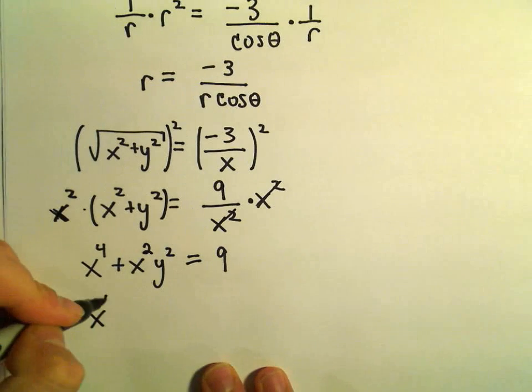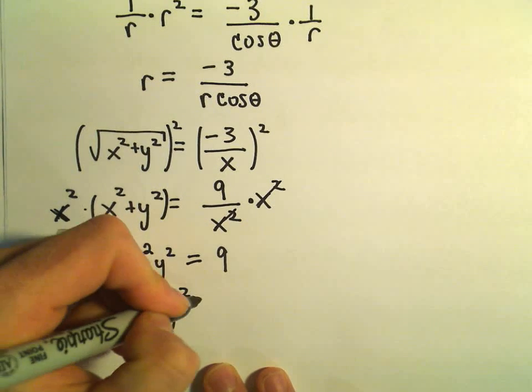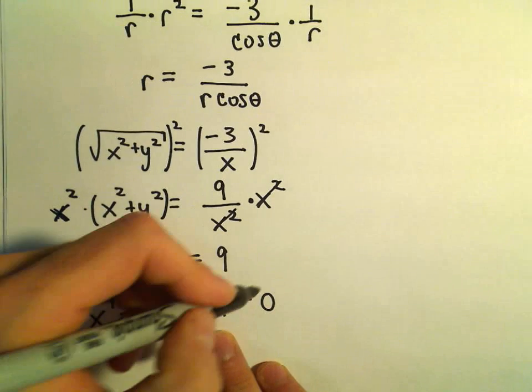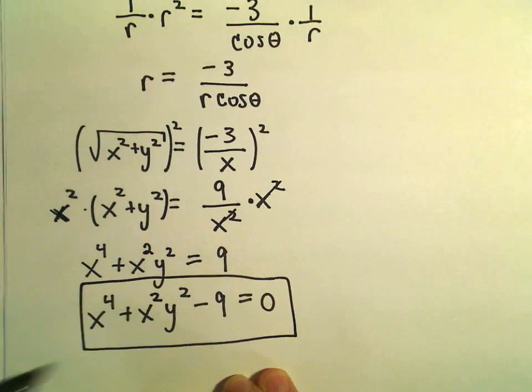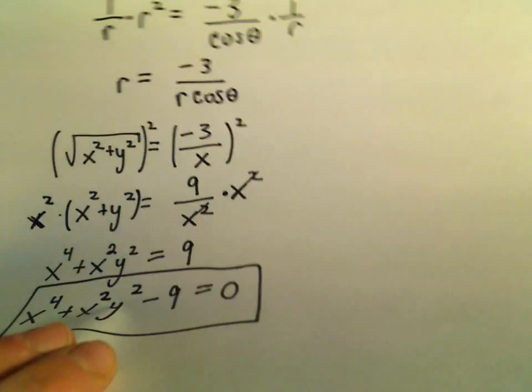So either you could leave it like this or we can make the right side 0 by subtracting 9 away. I think that would be a good place to leave it. Let's do our other example here as well.